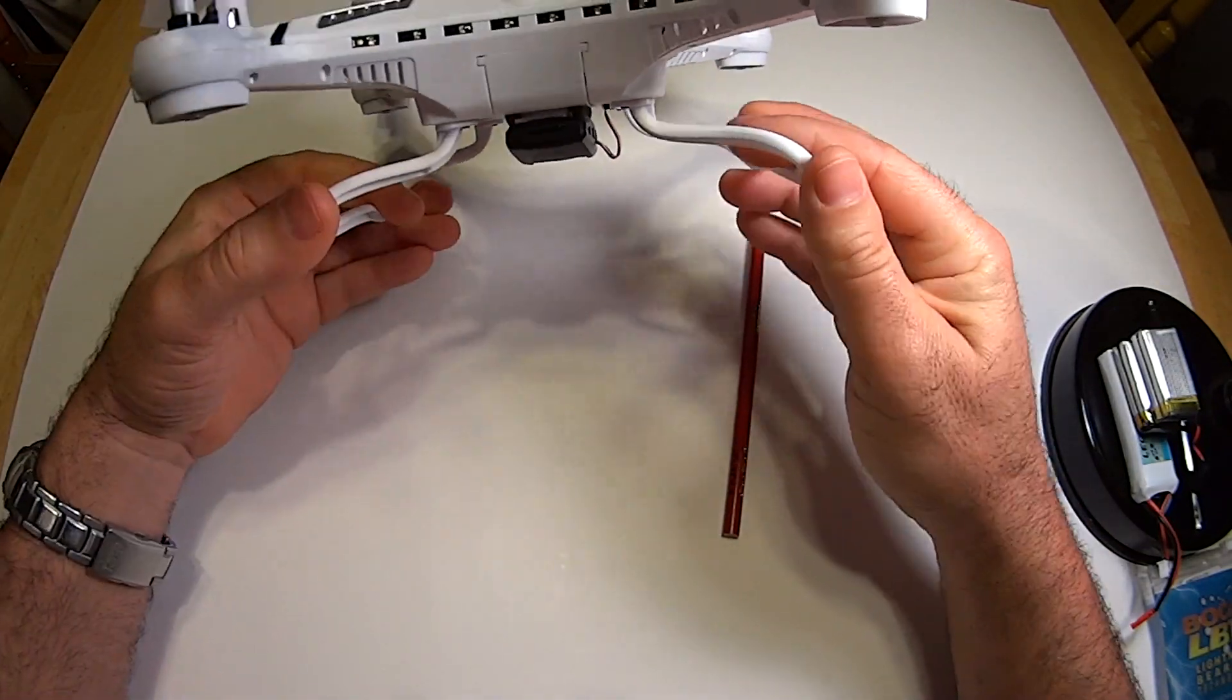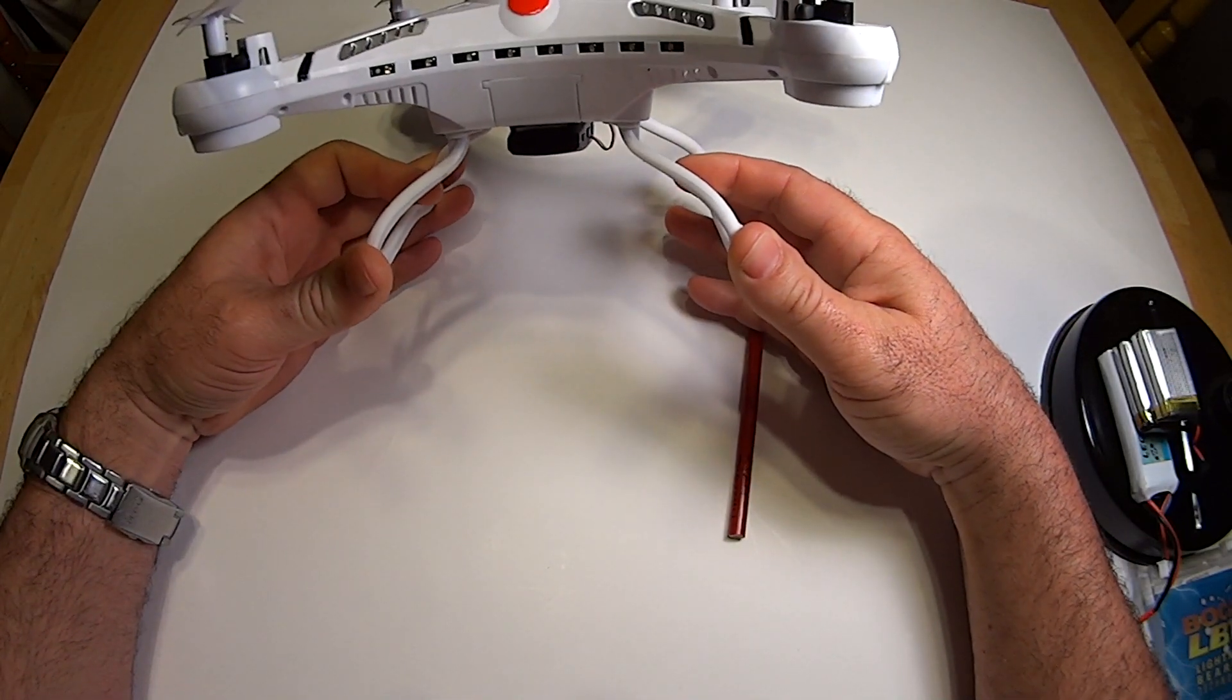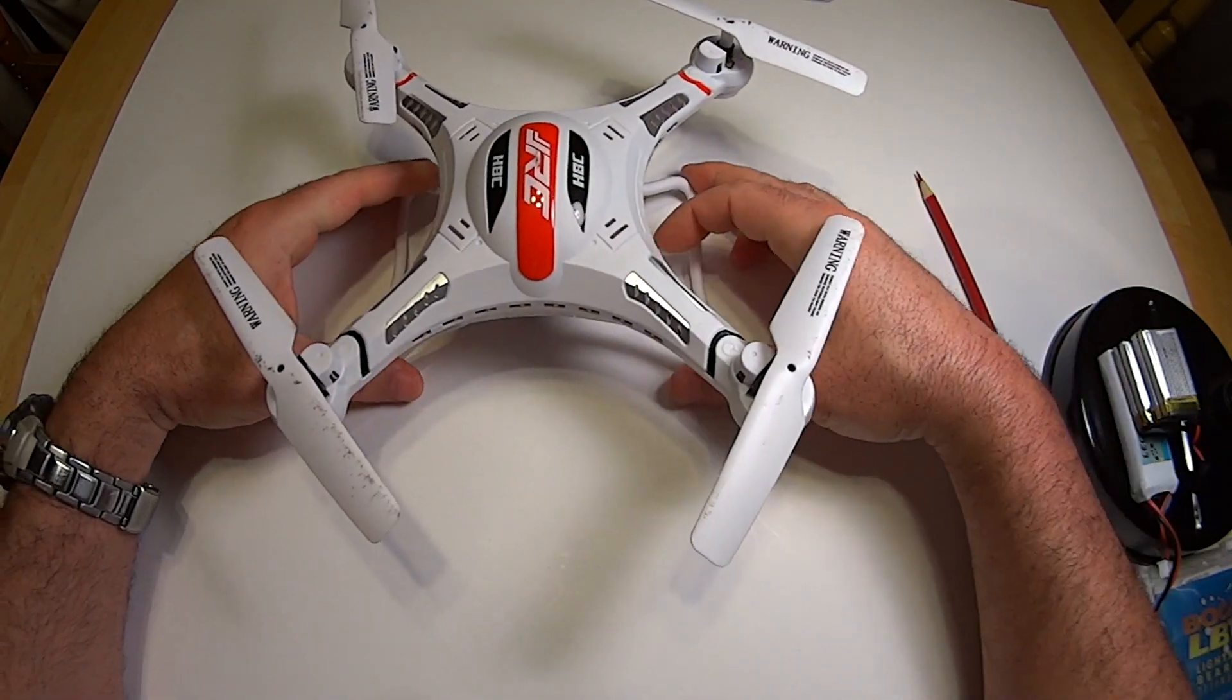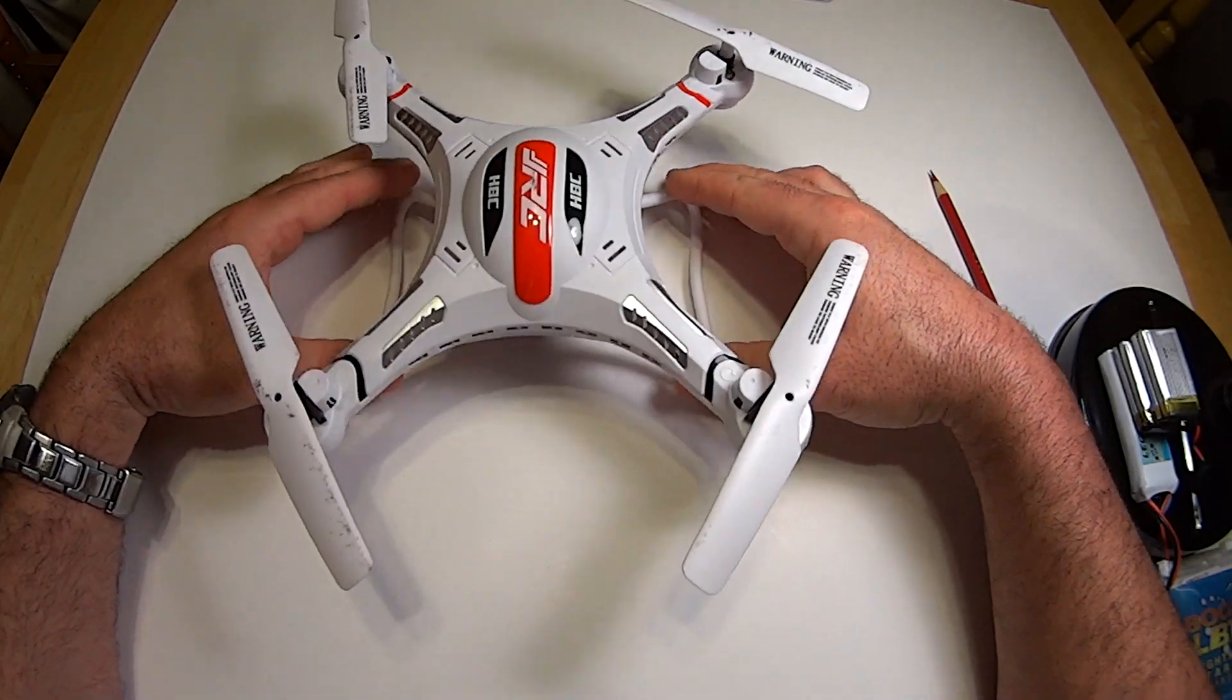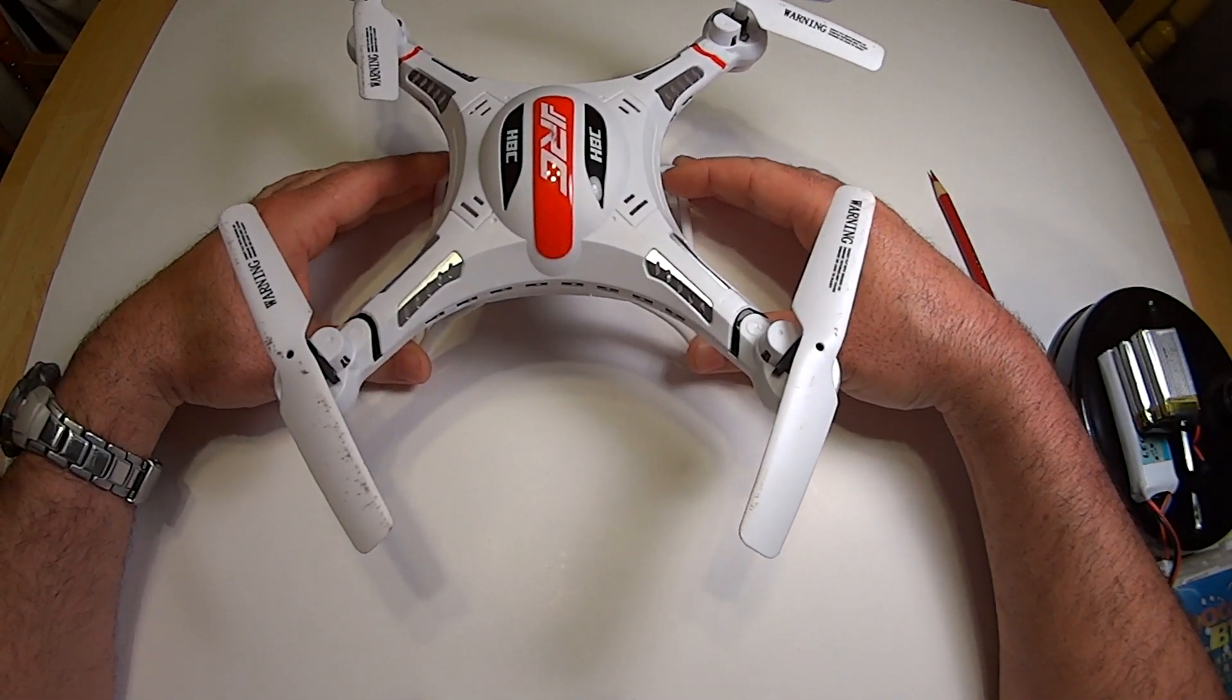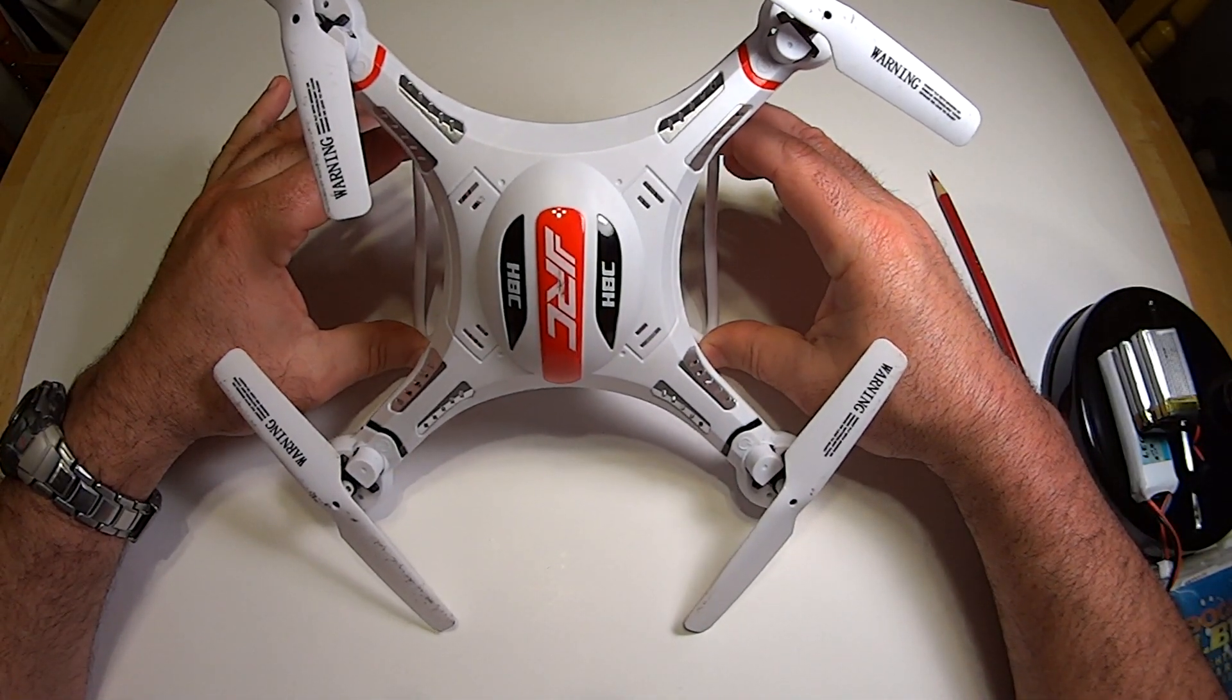So the landing gear, when you first get the quad, it's actually kind of like this. It's pretty high up. And what I noticed is when you're landing and stuff, it tends to bounce and flip over on the side like this. And if your landing gear is too high like it is how it comes, it kind of flips over and then it sits like this and just stays there.